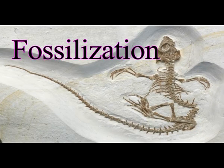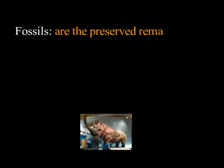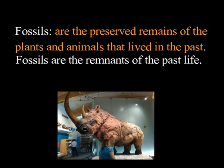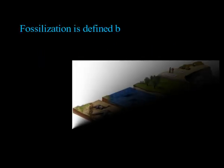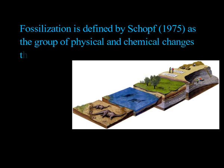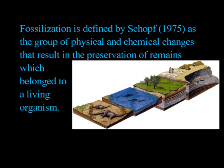Hello friends, today we are going to discuss fossilization. Fossils are the preserved remains of plants and animals that lived in the past — they are the remnants of past life. Fossils are formed through a process called fossilization, which is defined as the group of physical and chemical changes that result in the preservation of remains belonging to a living organism. There are different processes by which fossils are formed.